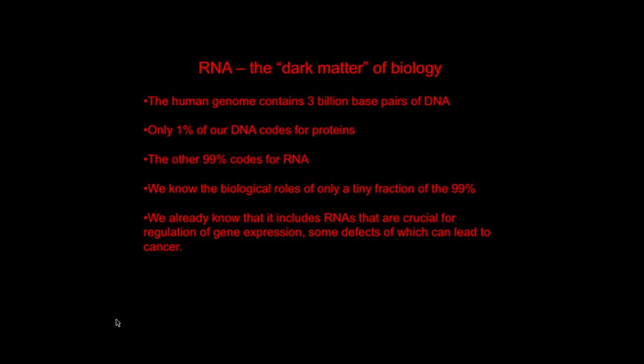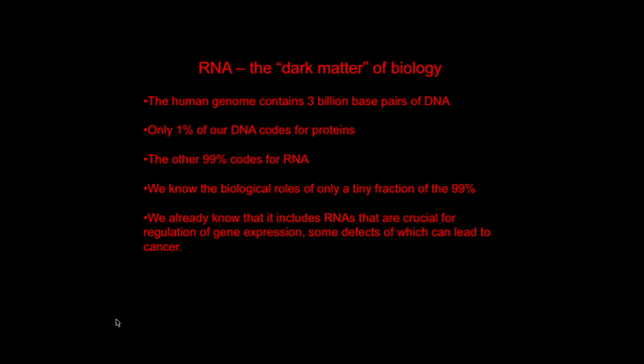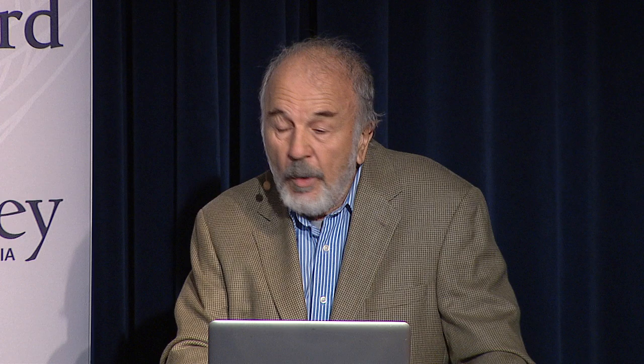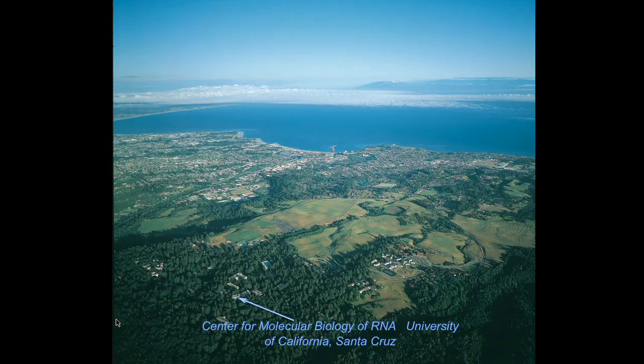The final question is the dark matter of biology. The human genome contains 3 billion base pairs — only 1% codes for protein, the other 99% codes for RNA — and we know the biological roles of only a tiny fraction of that 99%. We know some of them are really important regulatory molecules, but what lies in there we have no idea. This would be a wonderful project for the next decade for many people in the RNA field. I want to close by thanking my co-workers Jay Doudna, Laura Lancaster, John Paul Donahue, and Srividya Mohan. Thank you.